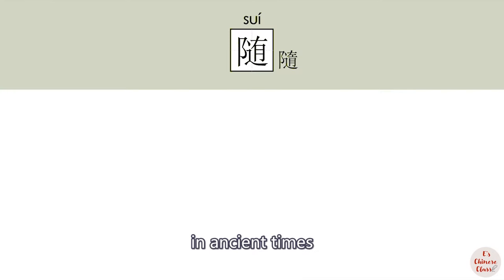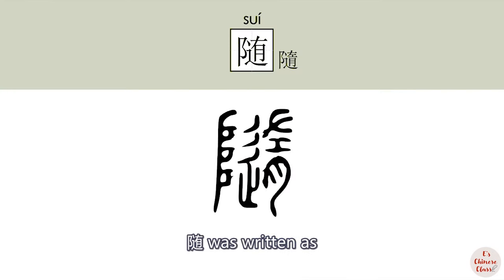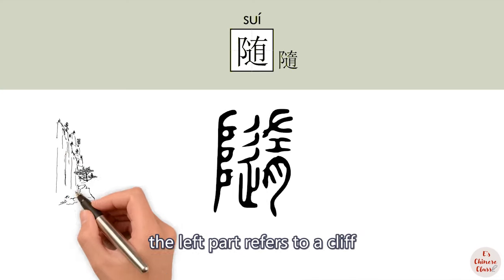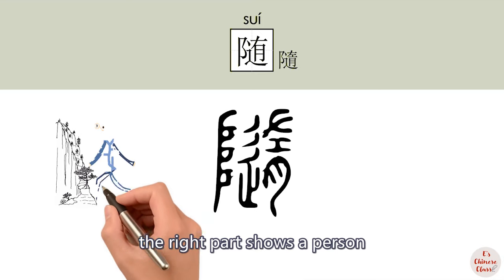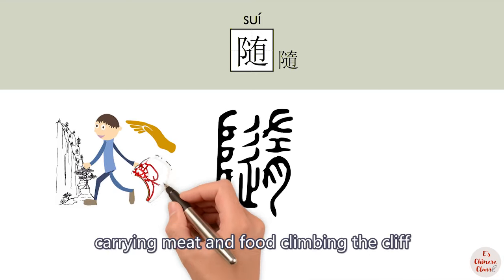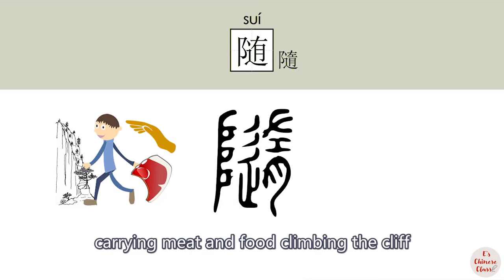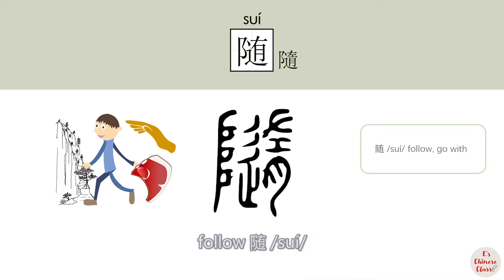In ancient times, 随 was written differently. The left part refers to a cliff, and the right part shows a person carrying meat and food climbing the cliff. So the original meaning of 随 is 'follow' (随).